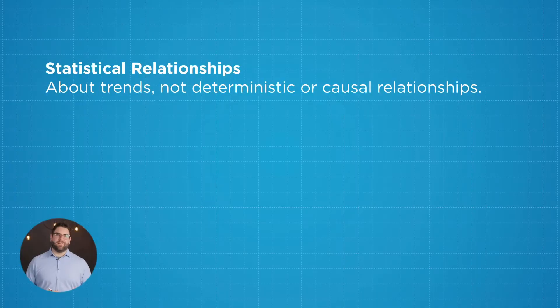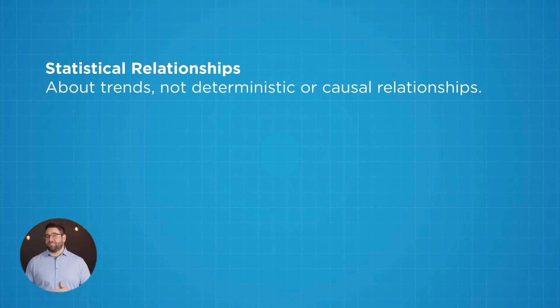All right, so we're going to move on to talk about the different kinds of statistical relationships. When we're talking about a statistical relationship, what I want you to think about is it's something that should be thought of as a trend. So it's not necessarily deterministic or showing that it's a causal relationship. Really that's not what we're talking about with statistical relationships.